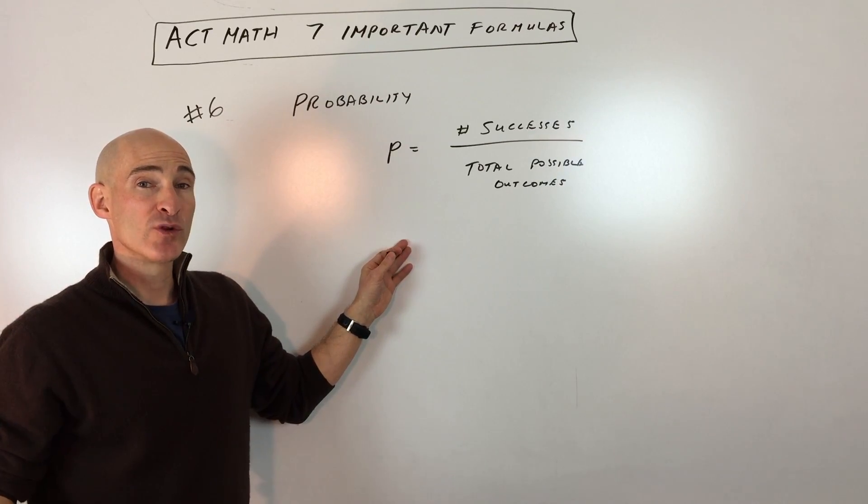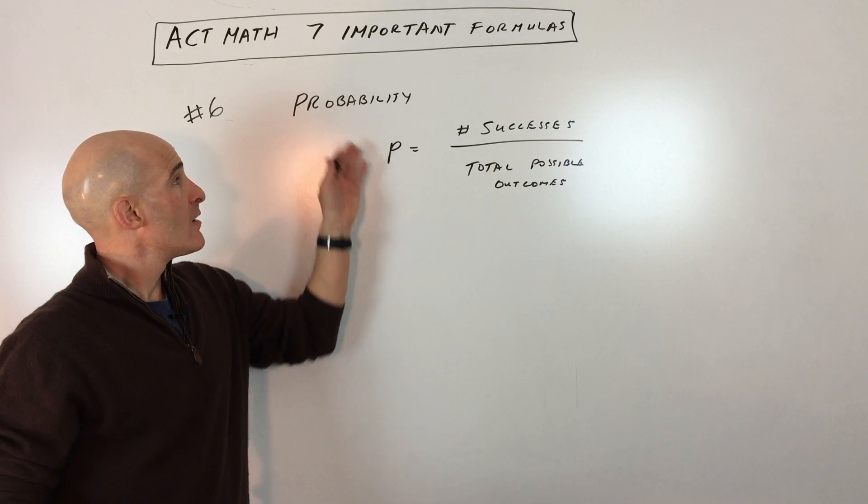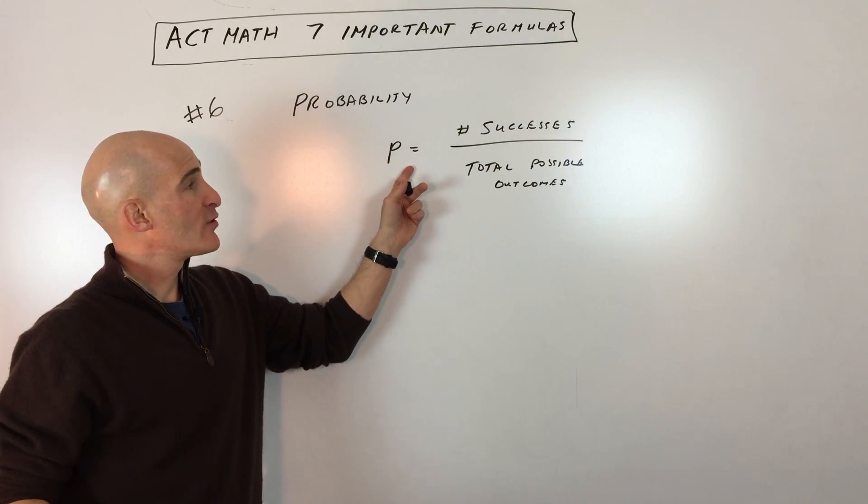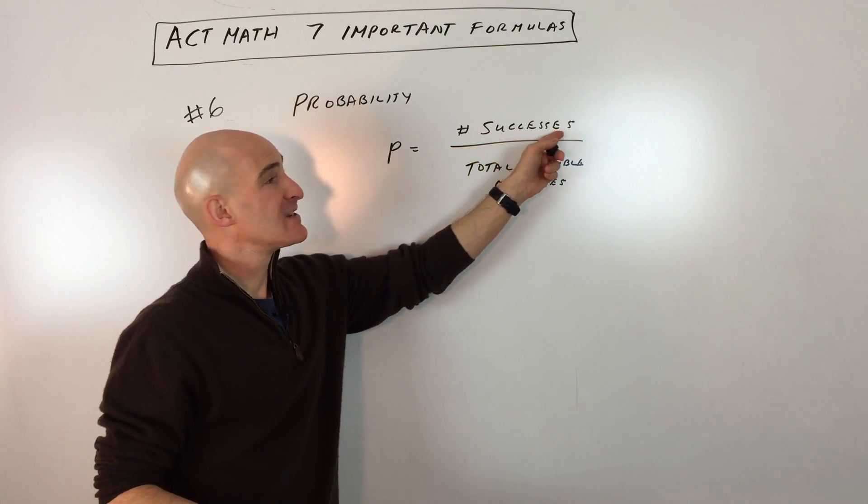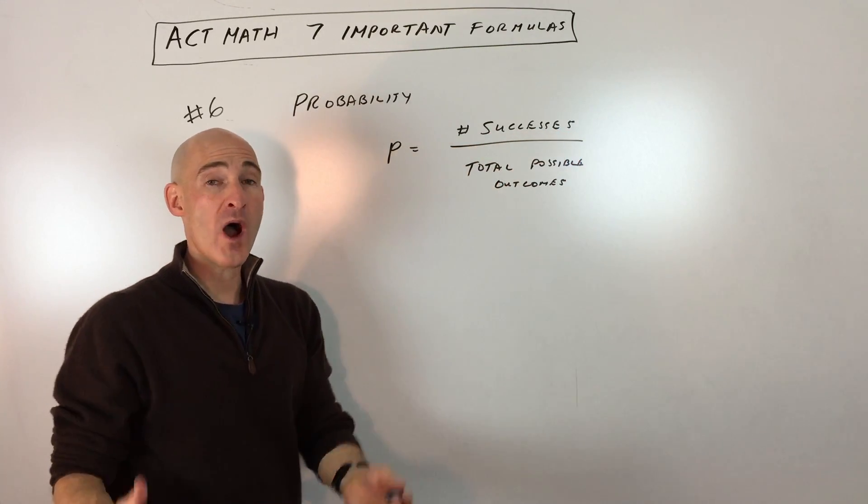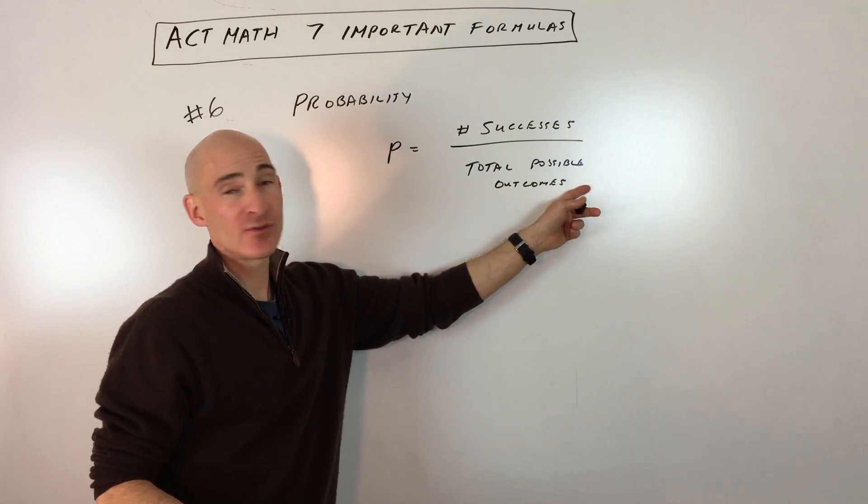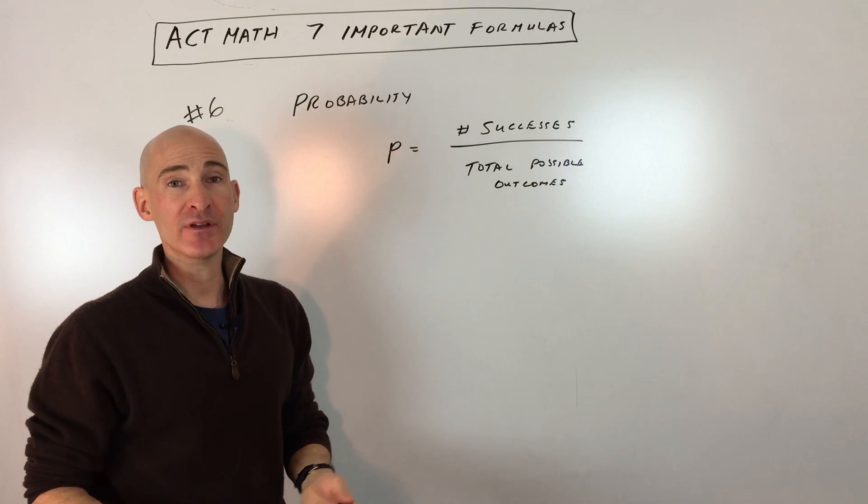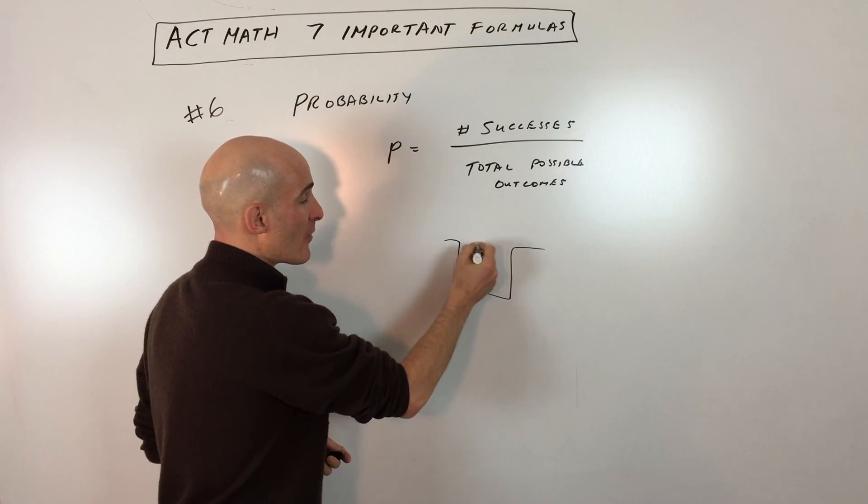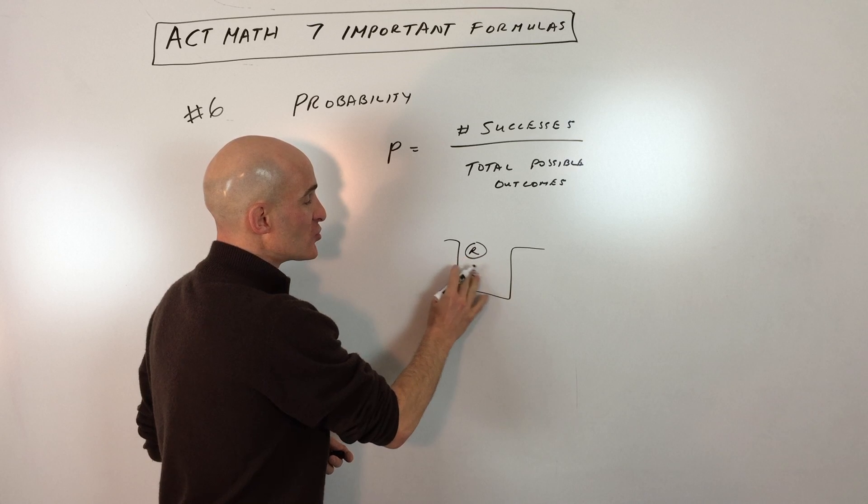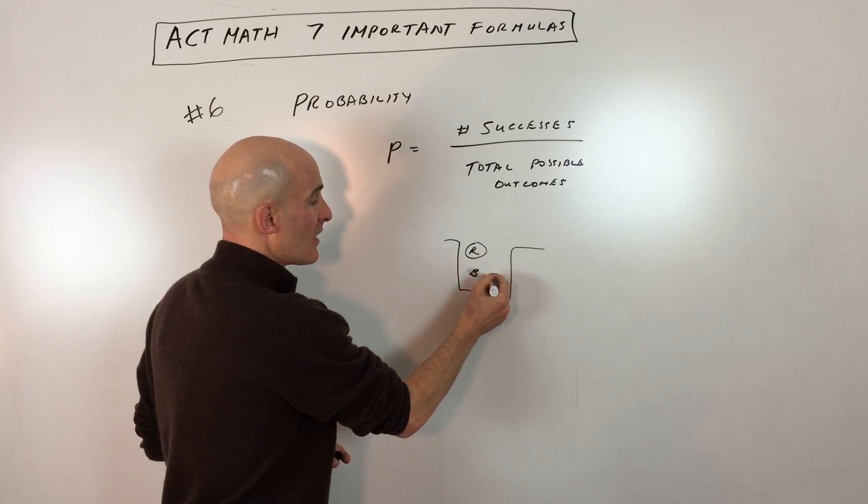Okay, the sixth formula that we're looking at here in this video is probability. And what probability is, it's the chance that something can happen. But as far as the formula goes, you take the number of successes, basically what you want, divided by the total possible outcomes, the total number of things that could happen. So for example, a very basic example, if you had a hat, and in the hat there was one red marble, and let's say there was two blue marbles.